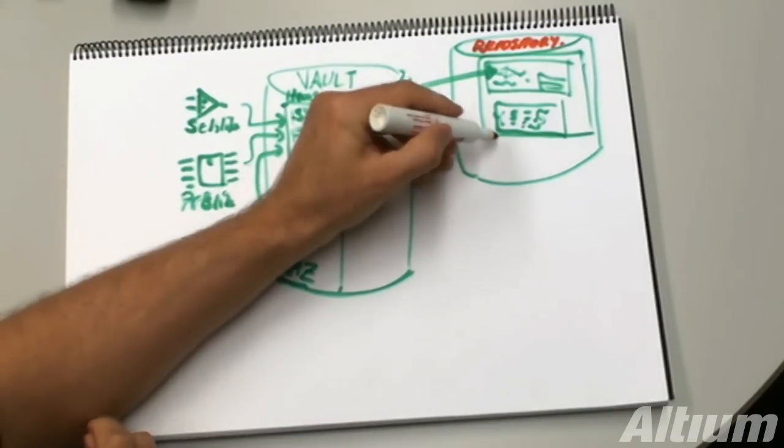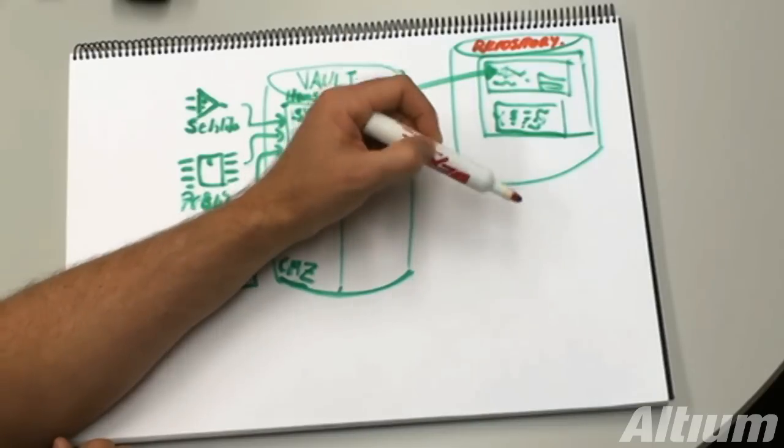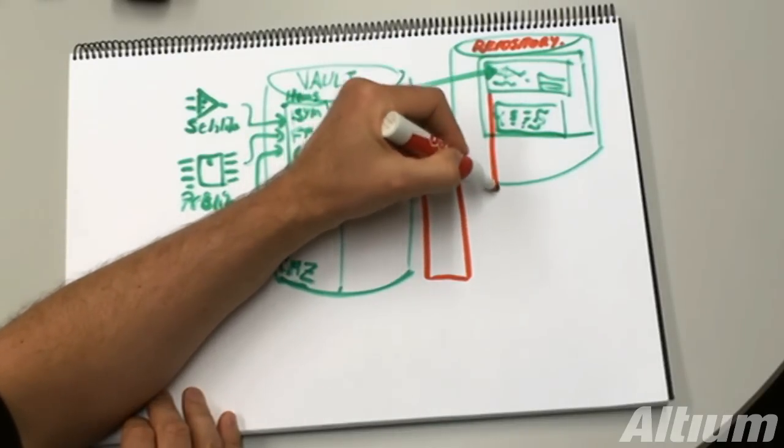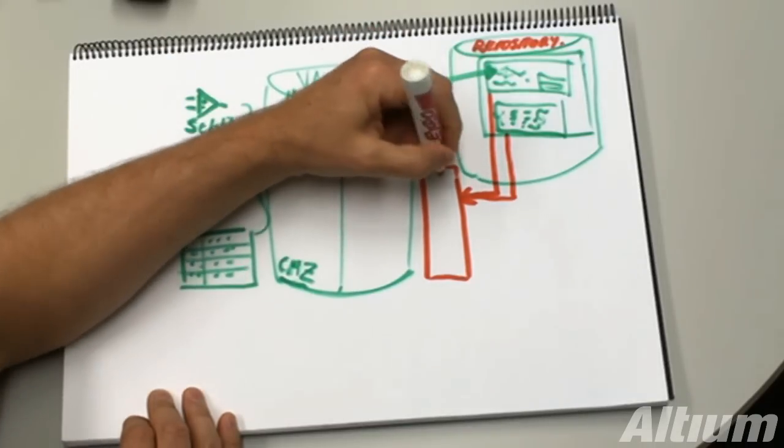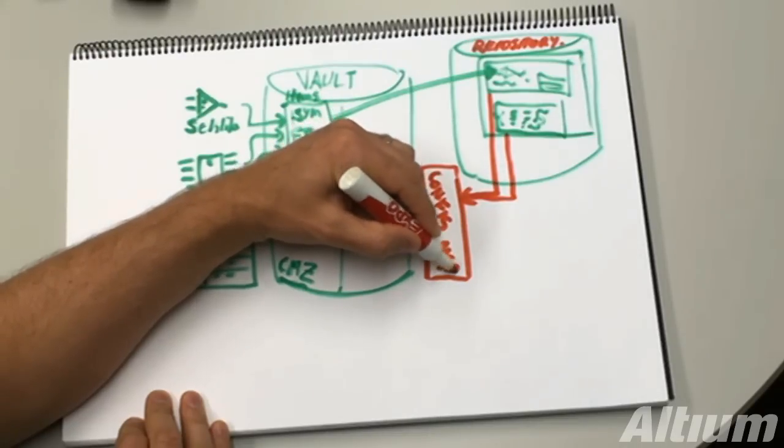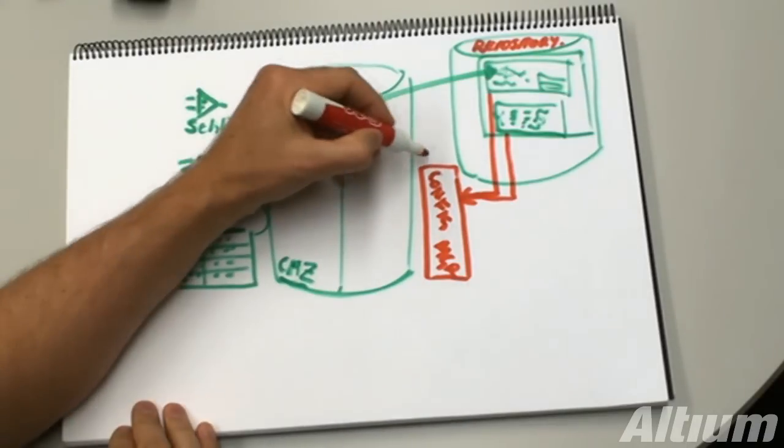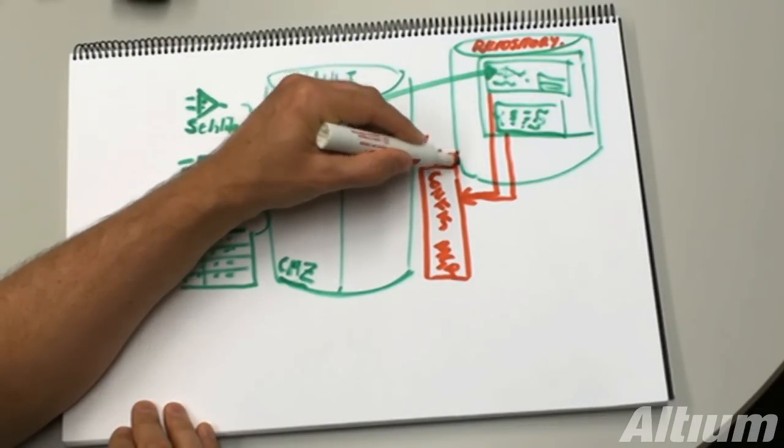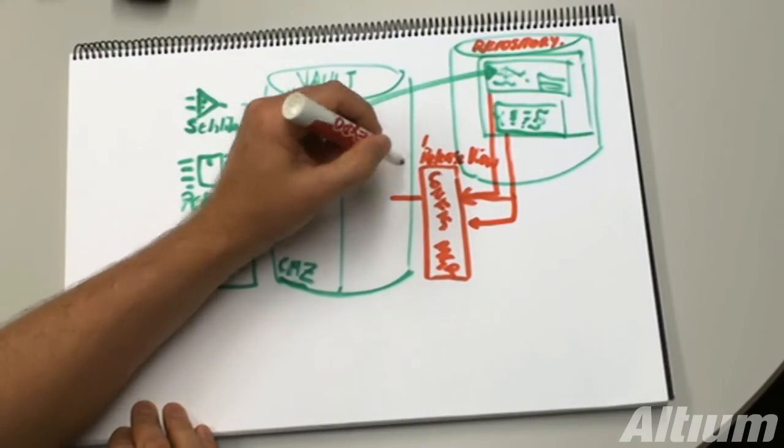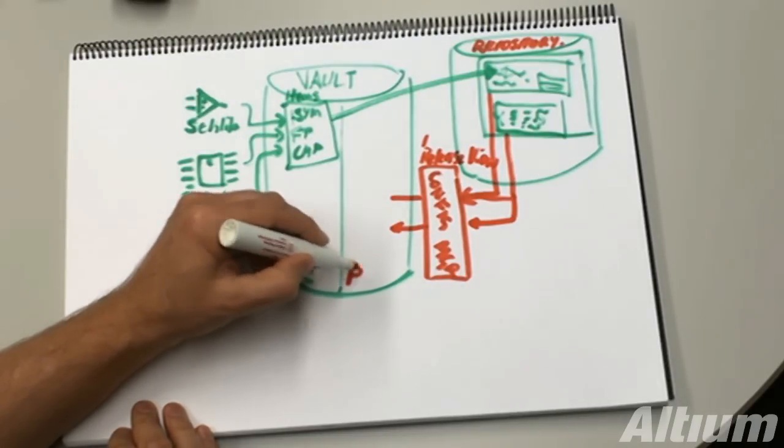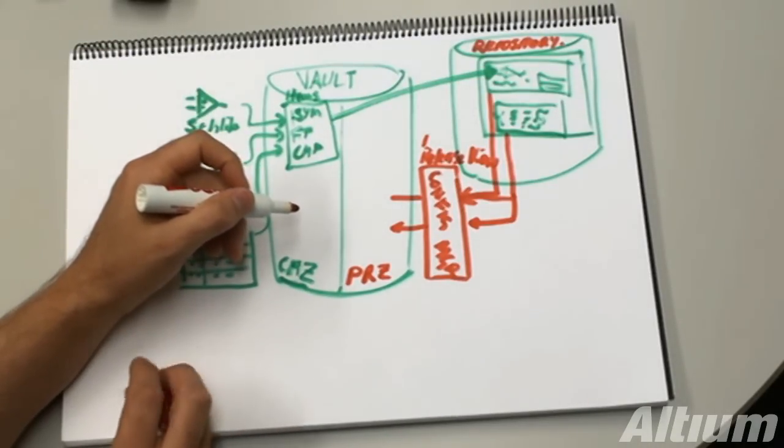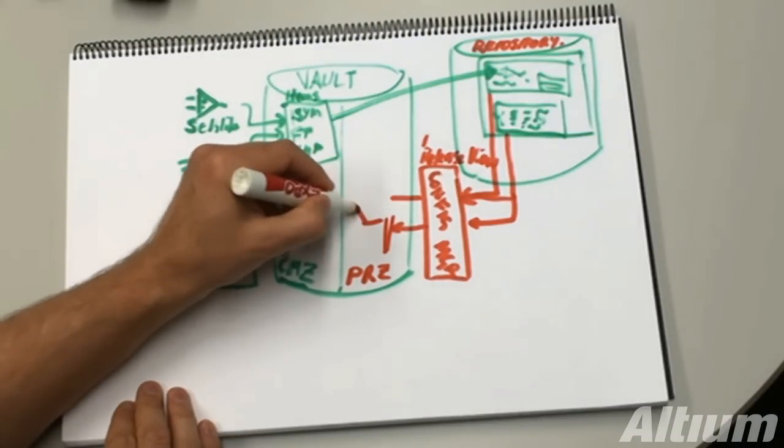And when the time comes that I'm ready to do some production work with my design, I'm going to release that design. So, those documents get released through the PCB project configuration manager. And we do that through the release view. And those, ultimately, get released into items in my production release zone part of my vault, which is going to be... These zones are top-level folders in the vault, typically.